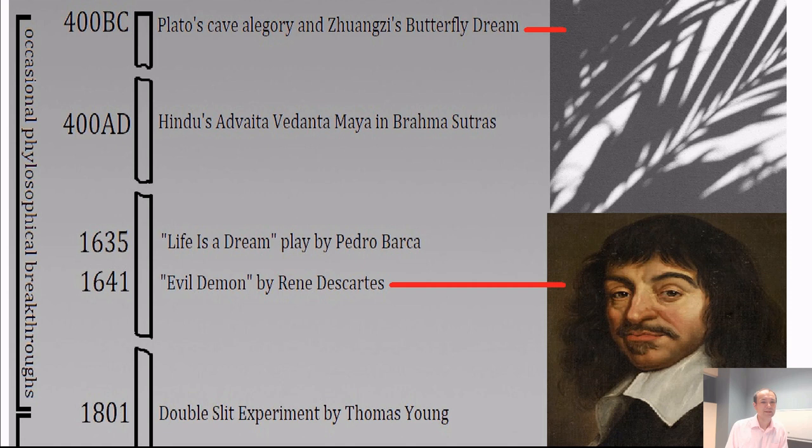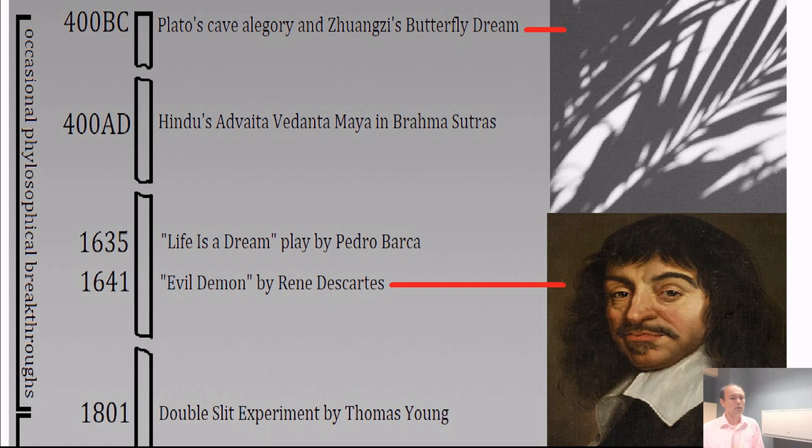400 AD brings the famous Hindu Advaita Vedanta Maya religion or movement. It's hard to define exactly what it is, but it was discovered in the Brahma Sutras scrolls. The idea there is pretty much the same: there is a God who dreams, and we are part of this dream.